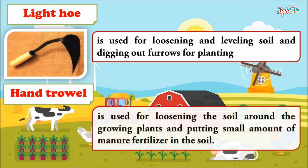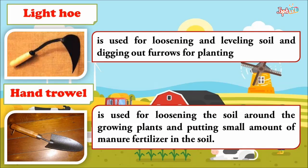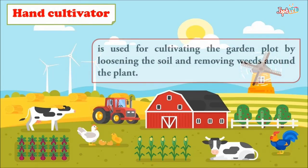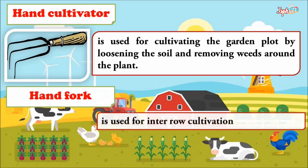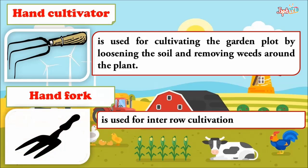The hand trowel is used for loosening the soil around growing plants and putting small amounts of manure or fertilizer in the soil. The hand cultivator is used for cultivating the garden plot by loosening the soil and removing weeds around the plant. The hand fork is used for inter-row cultivation.